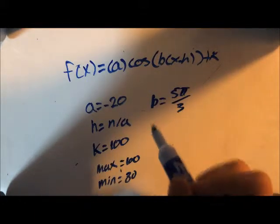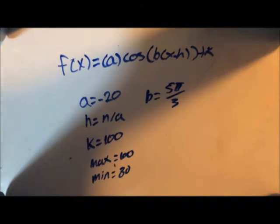Lastly, the b value is 5 pi over 3. This brings us to part a of the question.